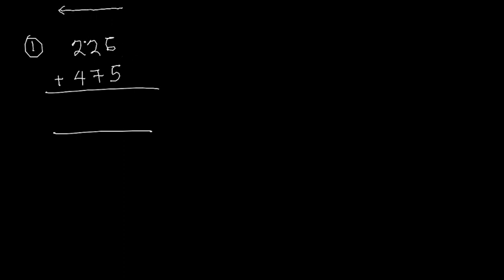The first thing you have to do is add the ones column: that is 6 and 5. Now 6 plus 5 is equal to 11. We do not write the total 11 here — we just write the first one in the ones place, and send the second one to the next column.